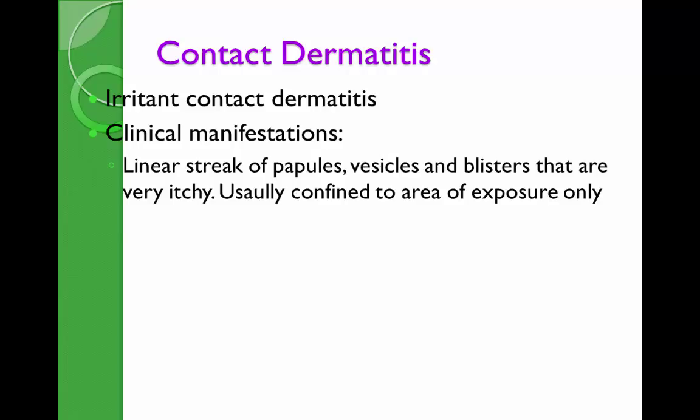In the acute phase, which can last one day, a week, or up to two months, there is redness, weeping, crusting, blistering, papules, or vesicles — essentially confined to the area where the allergen was exposed. In the chronic phase, patients exhibit scratching and lichenification.